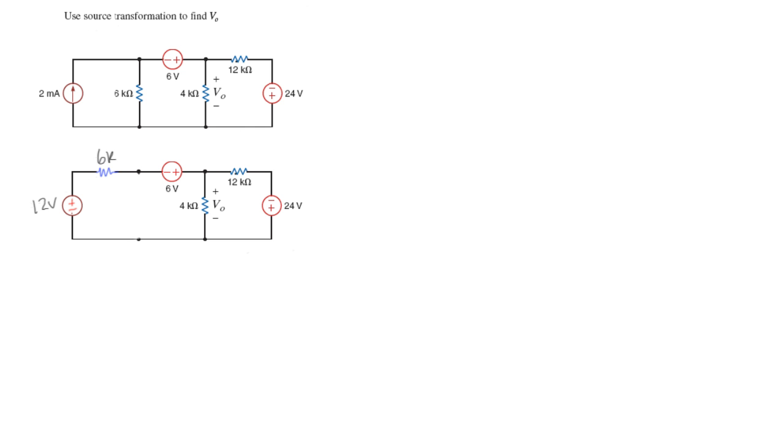Okay, so we have our 6K. Now we've got our new circuit here with our 6K in series with a 12 volt power source instead of having the current source and a resistor in parallel. One step closer to solving the circuit.